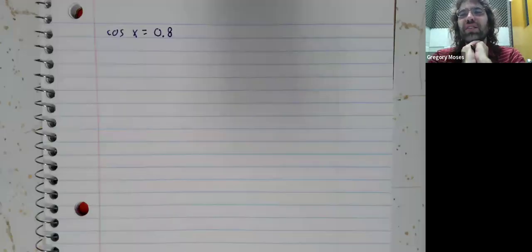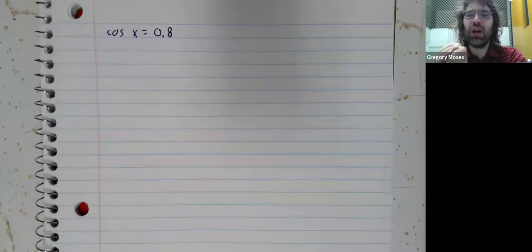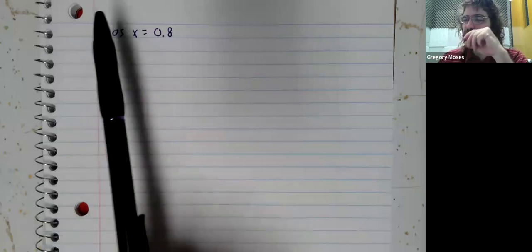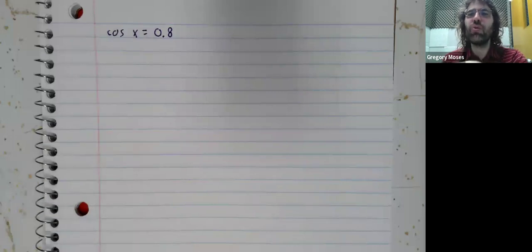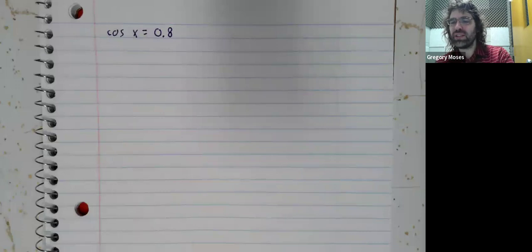So I'll basically do the example from the textbook, except that we already used the sine twice in a row, so for a little variety, let's solve the cosine of x equals 0.8.